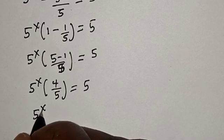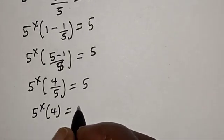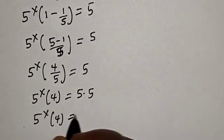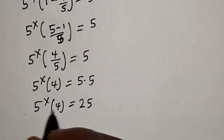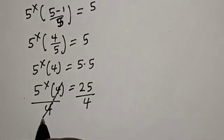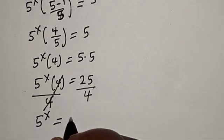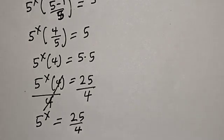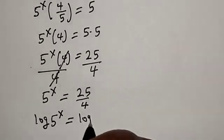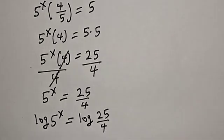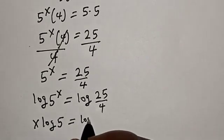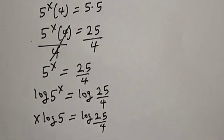Now let's cross multiply. We have 5 raised to power x multiplied by 4 is equal to 5 multiplied by 5. So 5 raised to power x times 4 is equal to 25. Let's divide both sides by 4. Then we have 5 raised to power x is equal to 25 over 4. Now let's take the log of both sides: log of 5 raised to power x is equal to log of 25 over 4.